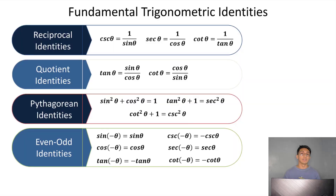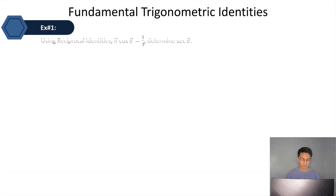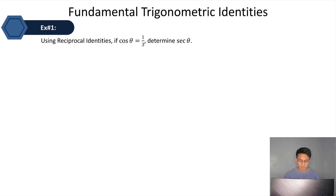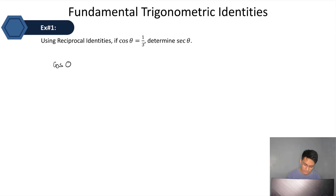Let's take 10 sample problems. Example number 1, using reciprocal identities: if cosine theta is equal to 1/3, determine the secant theta. Using the reciprocal identity, cosine theta is equal to 1 over secant theta. The given is cosine theta, and what we need to find is secant theta.